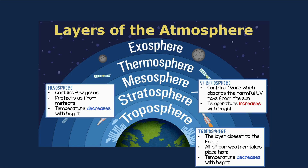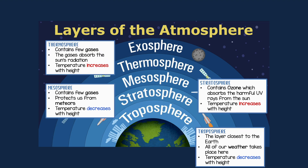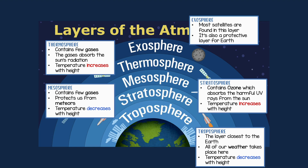The mesosphere contains few gases, it protects us from meteors, and the temperature decreases with height again, like the troposphere. The thermosphere also contains few gases; the gases absorb the sun's radiation and the temperature increases with height, like the stratosphere. The last layer is the exosphere, where most of our satellites are found, and it's also a protective layer for the Earth.